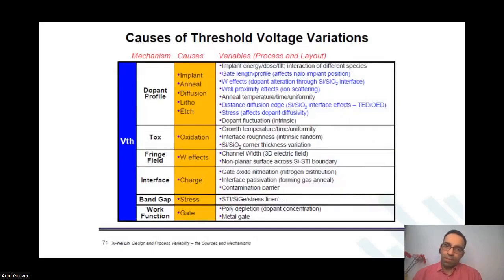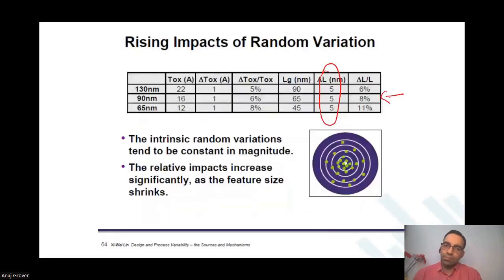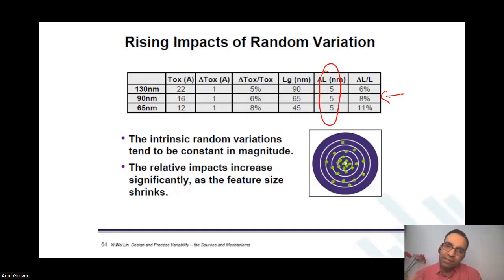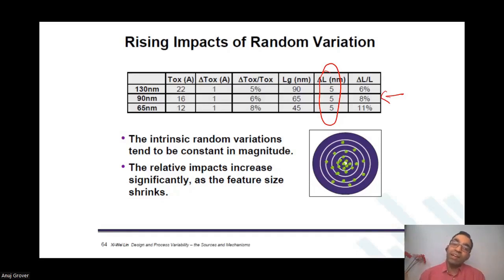In the random variations, we had three kinds of variations. But here it is saying that the intrinsic random variations tend to be constant magnitude. What exactly do we mean by intrinsic random variations? Line edge roughness is intrinsic to the way the device is manufactured. Interface roughness is intrinsic to the way silicon dioxide is deposited. They are intrinsic — not because of something else. The dopants that come under one gate are not dependent on any other gate. Therefore, it is called intrinsic variation.